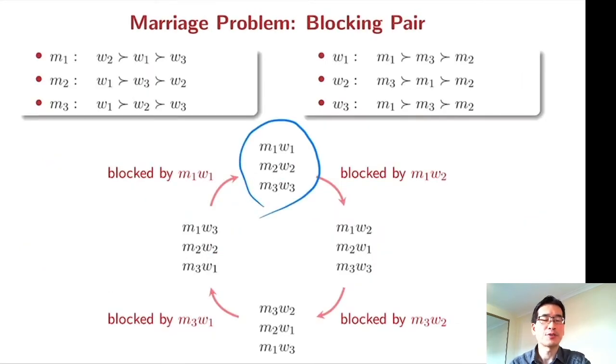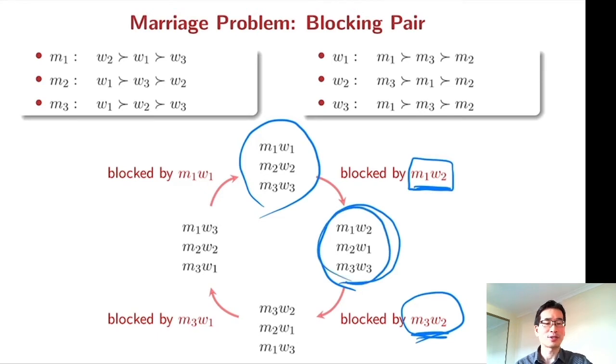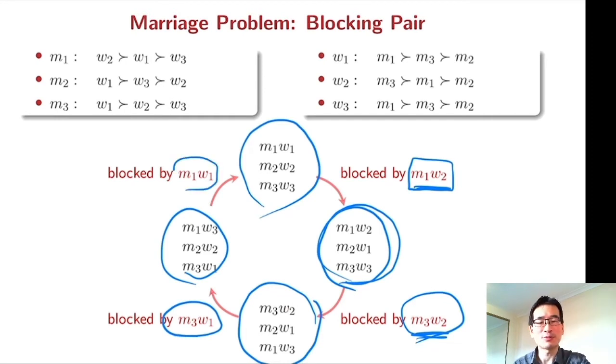So from this matching, there is a blocking pair who can be better off by getting married to each other. And that is another matching. So you may wonder they can end up with some stable matching by themselves. But unfortunately, you can see there is another blocking pair who can be better off from this matching. And that is another matching. And there is another blocking pair after which they come back to the previous unstable matching.